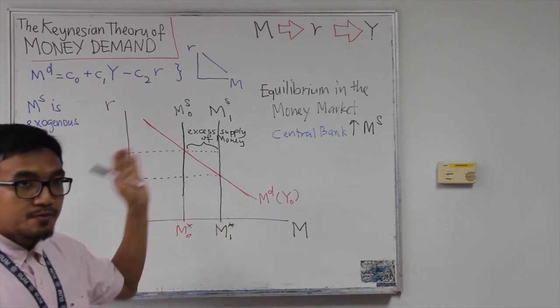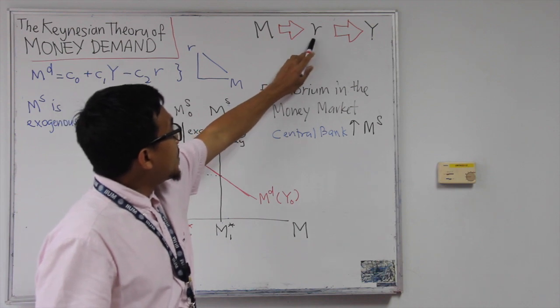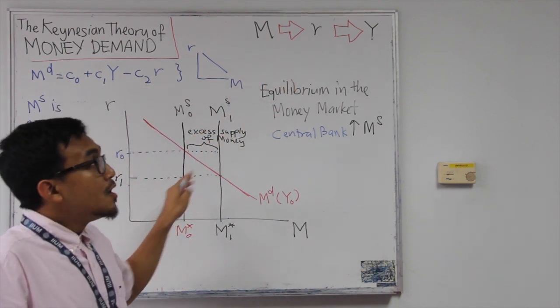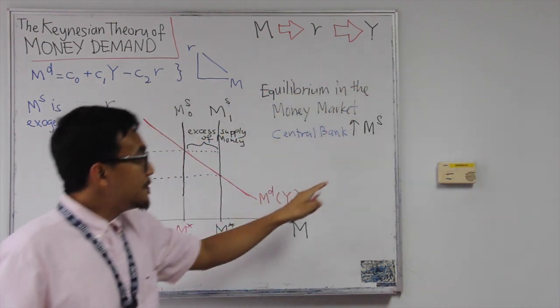Because we know that from our previous discussion, when we look at all these links. So we know that when, so now from this story, we know that interest rate has gone down. When interest rate goes down, output will then have to change. Right. I mean, like when interest rate goes down, investment will go up.